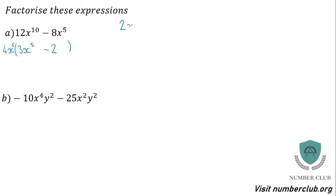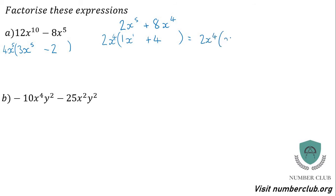Let me do one more quick example before moving on. The signs aren't both negative, so leave them as they are. Highest common factor of 2 and 8 is 2. 2s into 2 go once, 2s into 8 go 4 times. Lowest power is x to the 4. Then do subtractions with your powers: 5 take away 4 is 1, so x to the power of 1, and 4 take away 4 is nothing. Tidy that up: 2x to the 4 times (x plus 4).